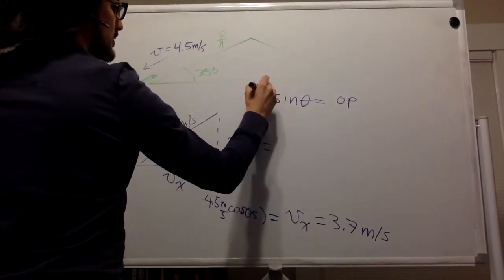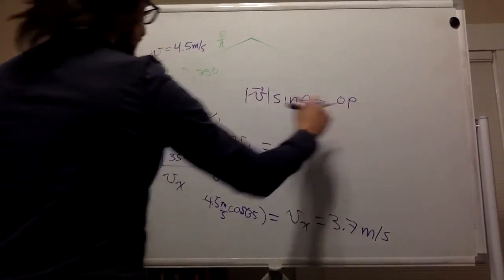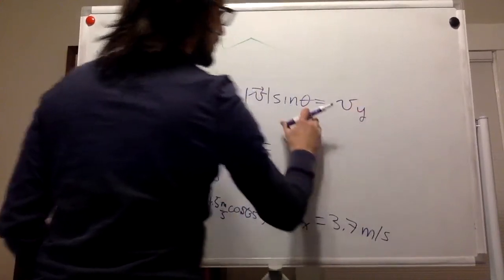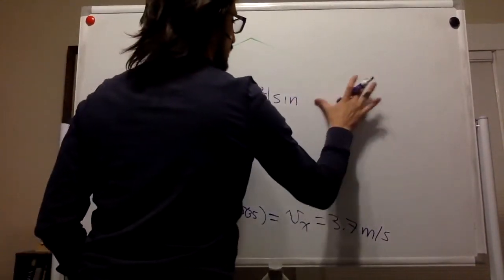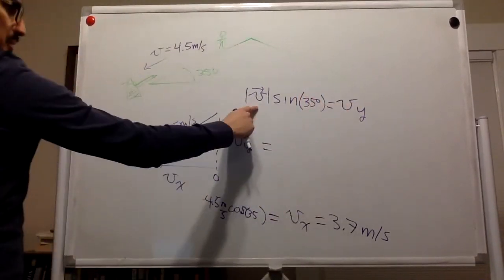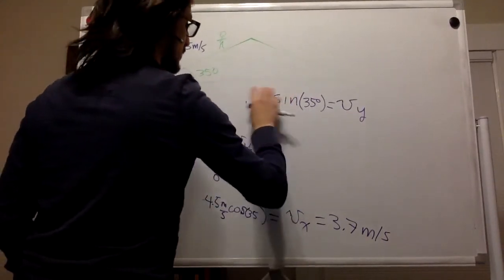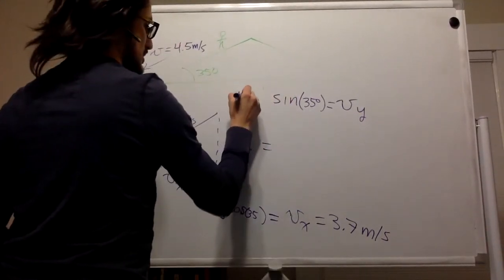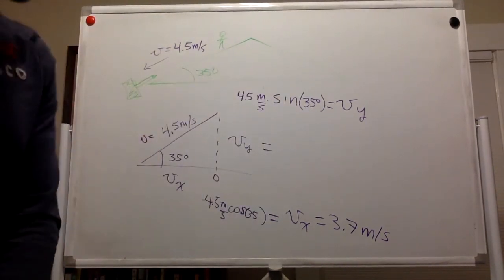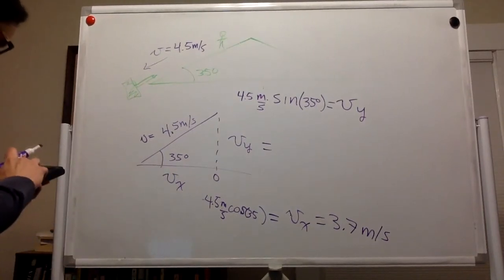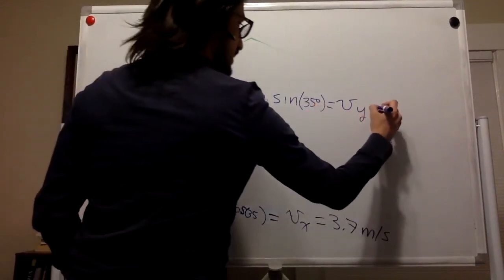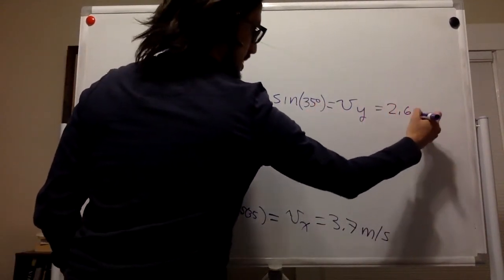The opposite is the y component of the velocity. The angle is 35 degrees. And the magnitude of the velocity is 4.5 meters per second. Right. So we can do that. 2.6 meters per second.